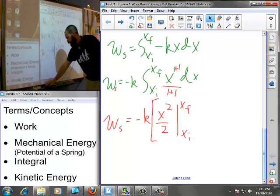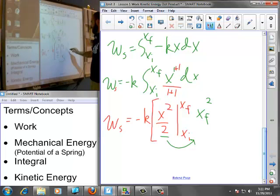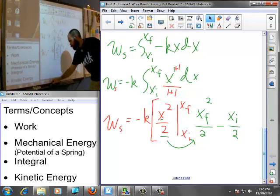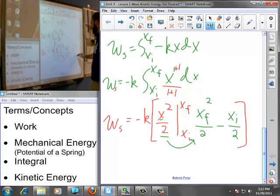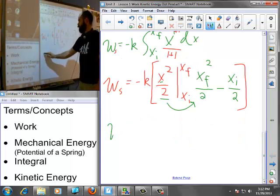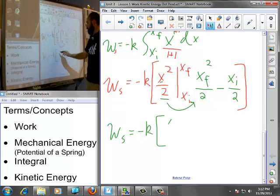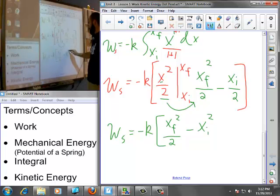So what do I get? What I do next is I then evaluate this portion into this function here. So I'll plug in an xf where I see x, divided by 2, minus I'll put an xi wherever I see an x, divided by 2. And now we've done the integration. The only thing left is to finish the algebra. So I have the work done by a spring is equal to negative k, and I have xf squared divided by 2 minus xi squared divided by 2.